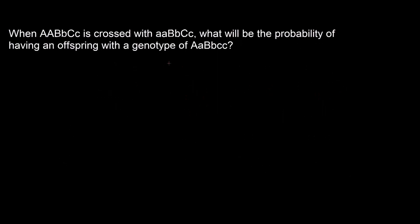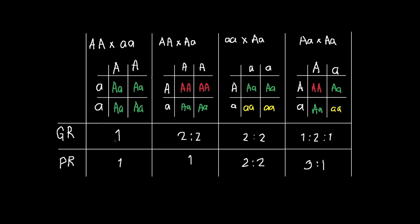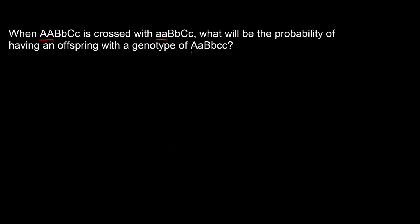Going back to the question, we can solve this by just knowing the genotypic ratios of the monohybrid crosses without the Punnett squares. We can treat the cross of each trait as independent events. Let us look first at trait A: a cross between AA and aa. From what we said earlier, the genotypic ratio is one — all offspring are heterozygous. Since we are looking for a heterozygous offspring, we jot down 100%, or four over four.